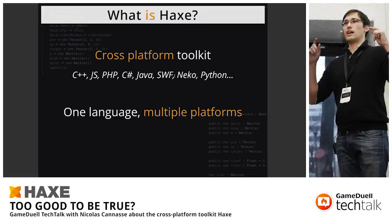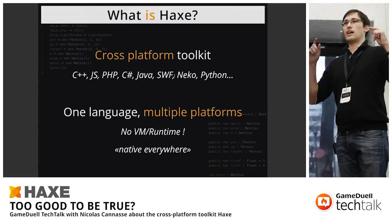One difference between Haxe and Java is that Haxe doesn't have a runtime — it's not a virtual machine running inside these platforms. Every platform we target, we target natively. So Haxe is native everywhere. When you target C++, you generate C++ code and it's compiled by the C++ compiler. When you compile to Java, it's running on top of the JVM. For every platform we target, you directly have access to the native layer.